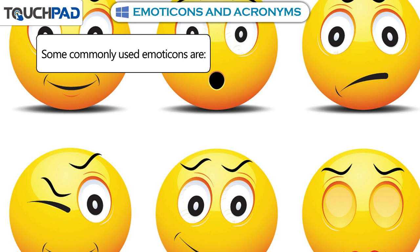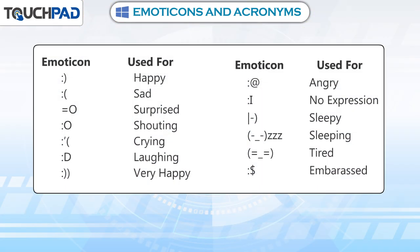Some commonly used emoticons are: colon-bracket for happy, colon-open-bracket for sad, equal-to-o for surprised, colon-o for shouting, colon-open-inverted-comma-open-bracket for crying, colon-D for laughing, colon-two-closed-brackets for very happy, colon-at-the-rate for angry, colon-I for no expression, straight-line-hyphen-close-bracket for sleepy, within-brackets-hyphen-underscore-hyphen-ZZZ for sleeping, within-brackets-equal-underscore-equal for tired, and colon-dollar for embarrassed.